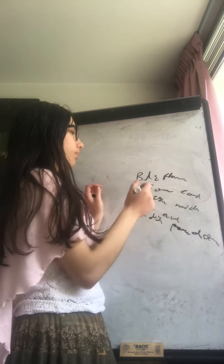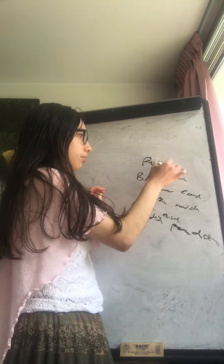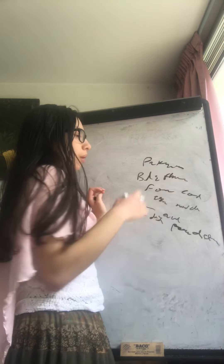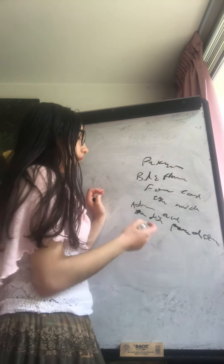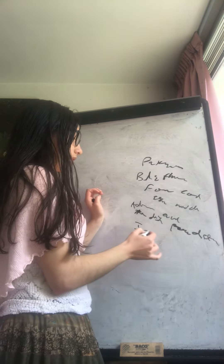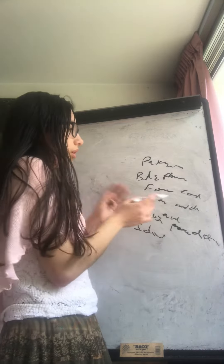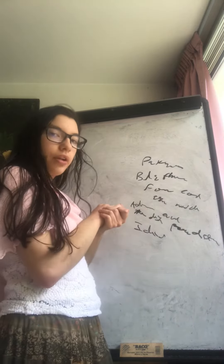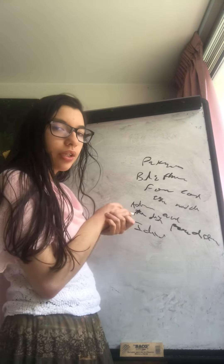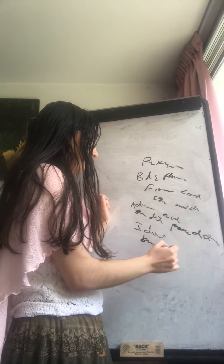Blepharospasm can also be seen in Parkinson's disease, but most of the time it is idiopathic — we don't know the cause. The patient just has the blepharospasm, and usually it is triggered by bright light.